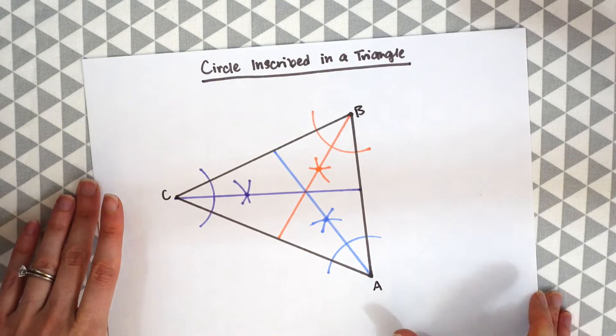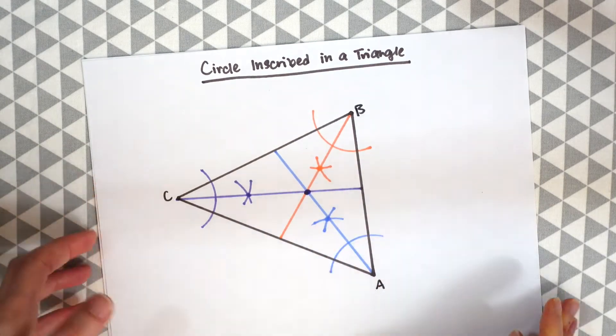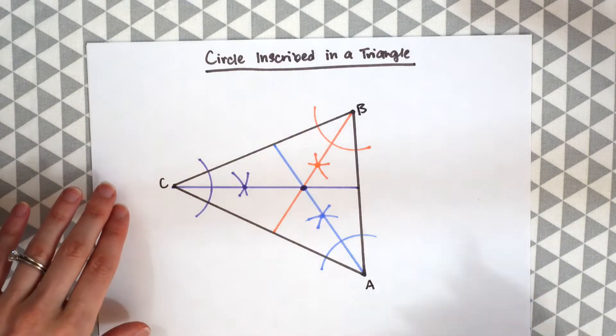So notice we now have this point in the middle where all three angle bisectors intersect and this is called the incenter.